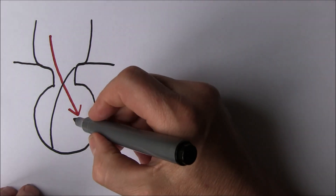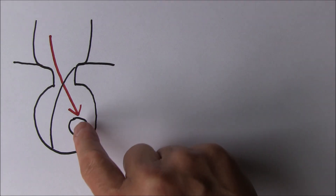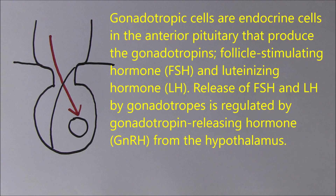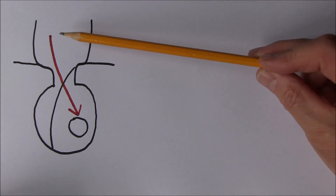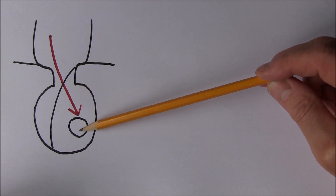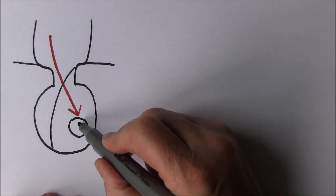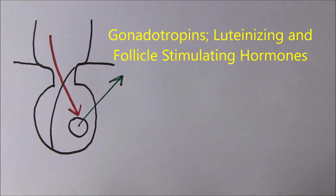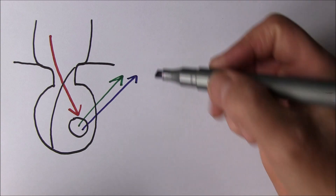In the anterior pituitary there's a group of cells called the gonadotrophs, and it's the gonadotrophs that produce the gonadotrophic hormones. Puberty really begins when gonadotrophin releasing hormone goes from the hypothalamus to the anterior pituitary and causes the gonadotrophs to produce the gonadotrophic hormones. There are two of these released into the systemic circulation: luteinizing hormone and follicle stimulating hormone.